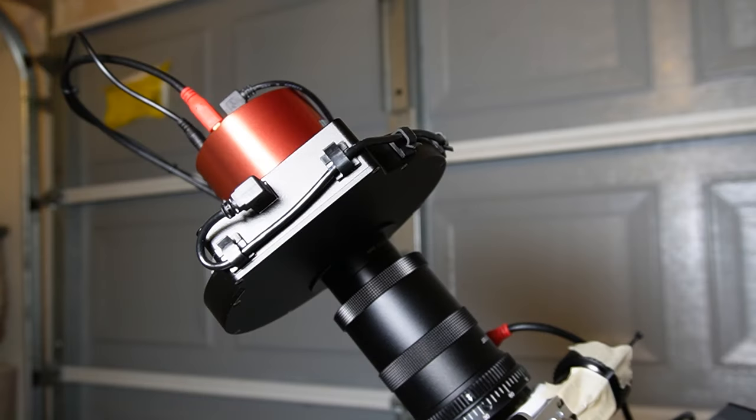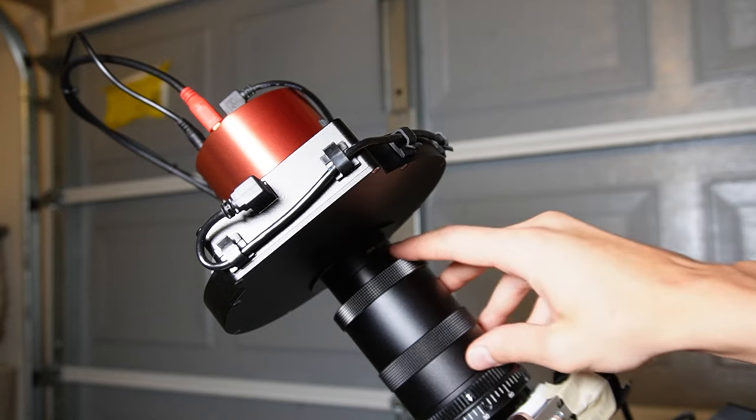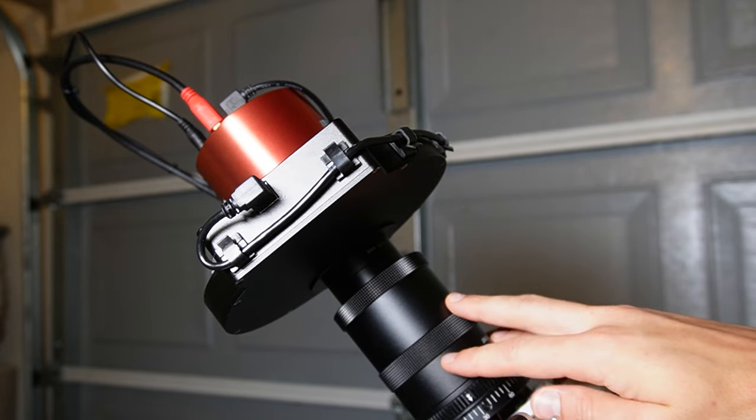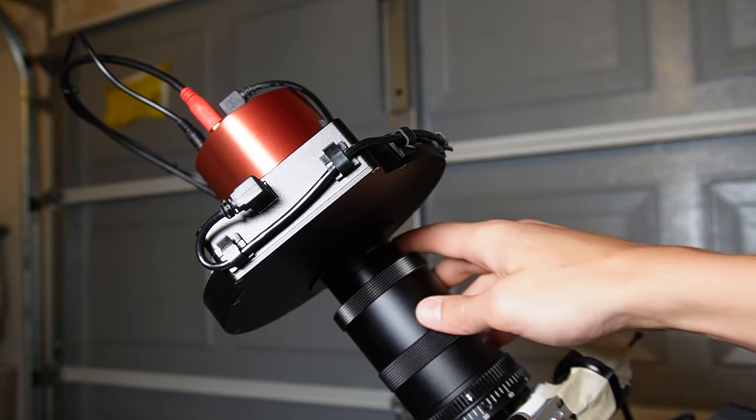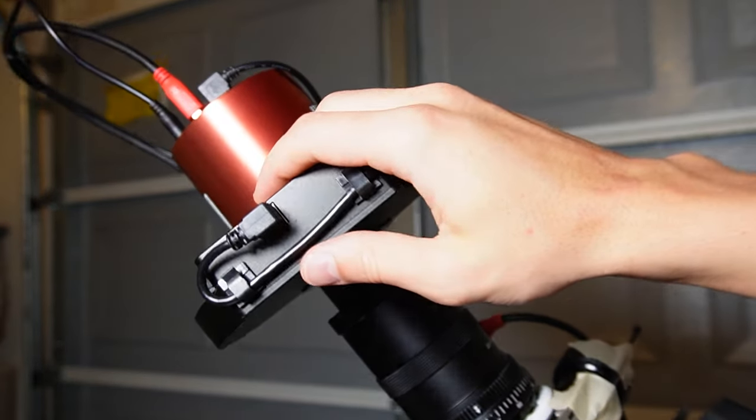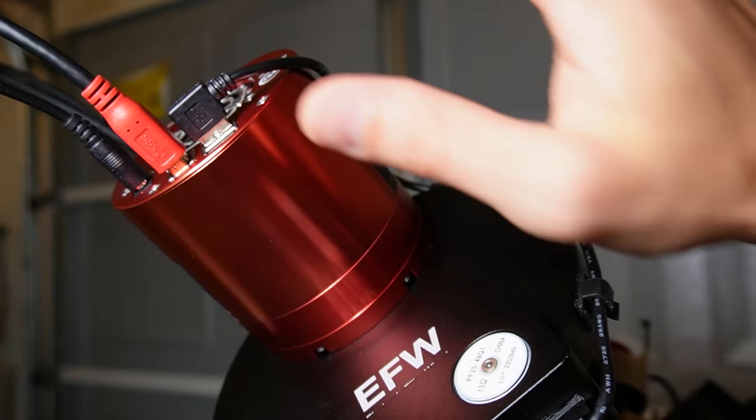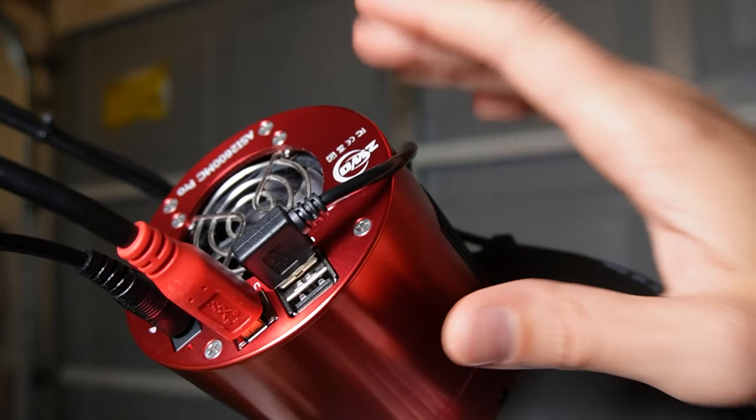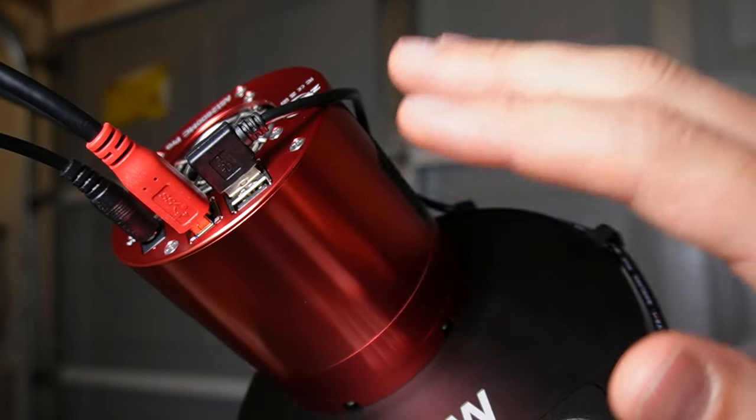Now, let me show you my imaging train so that you'll have an idea of what equipment the focuser was handling. So here is a 1x field flattener with some extension rings. And over here, I have a filter wheel with five two inch filters installed.